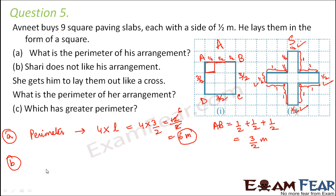So there are 4 small sides which are half in length. So now for the perimeter of the cross you will have to add this half 4 times. 1, 2, 3 and 4. So 4 into half. So the smaller sides are covered.